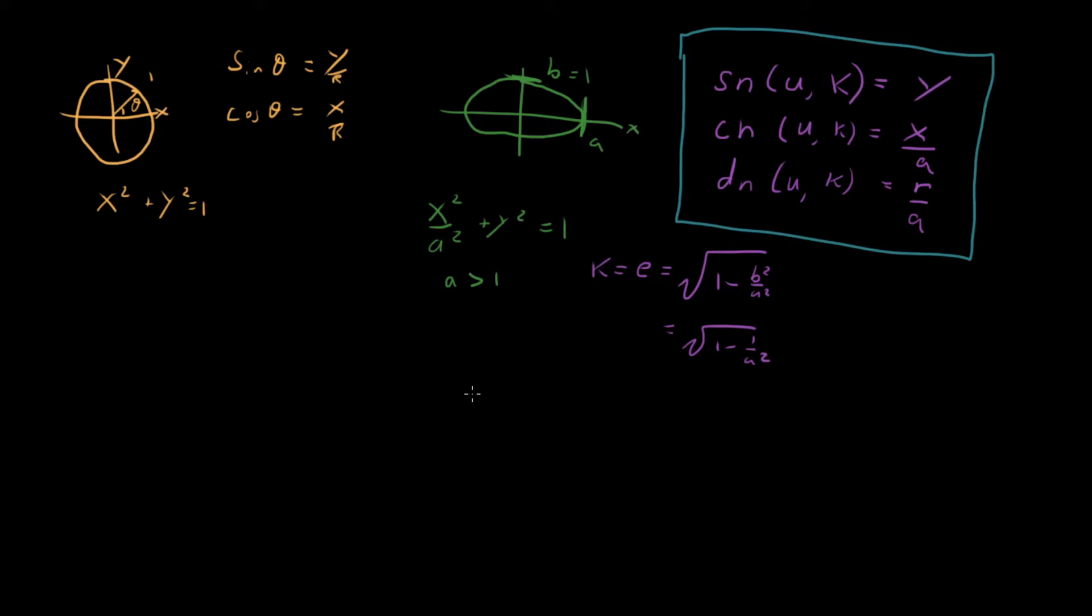And it turns out that the best way of defining u is like this. It's saying that du is equal to not just d theta, but r d theta. And this r here is going to be a function of theta.